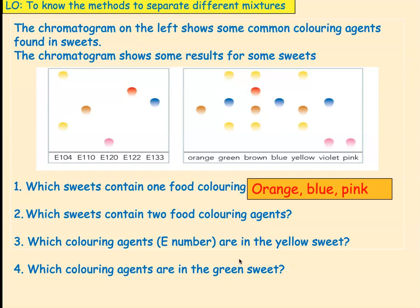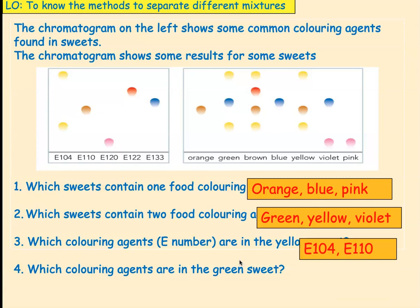Right, I'm going to leave you to try and do the other three questions. So, I'm going to pause the video now, and I want you to start the video again when you've answered the three questions. Okay, so the sweets that contain two food coloring agents are green, yellow, and violet. So, green is a mixture of E-104 and E-133, yellow is a mixture of E-104 and E-110, and violet is a mixture of E-133 and E-120. Now, the coloring agents that are in the yellow sweet are E-104 and E-110, because they've got the same pattern. And the coloring agents that are in the green sweet are E-104 and E-133.